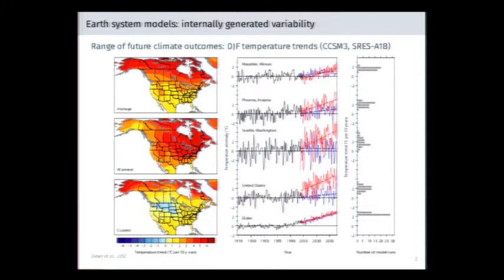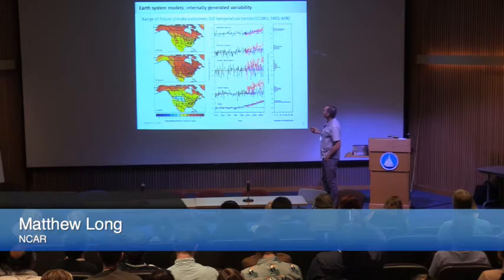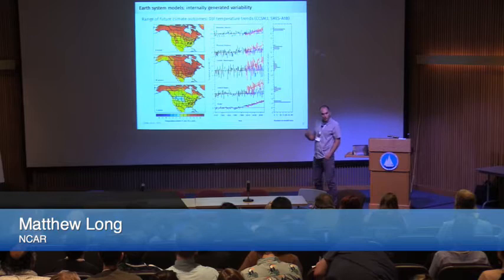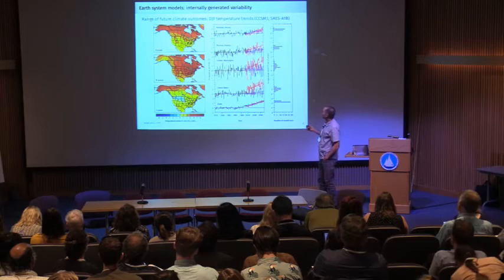For instance, this coolest member shows a significant cooling in the central Intermountain West that's not represented in the average signal. The implication is that the combination of forced change and natural variability is really what's going to determine the evolution of the system over the next several decades. This has implications — if you're in Seattle and you get this ensemble member, life pretty much just marches on, whereas the one that exhibits the most warming has a pretty radical trend.